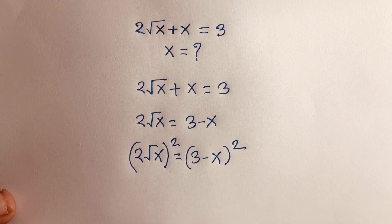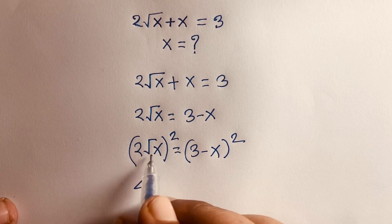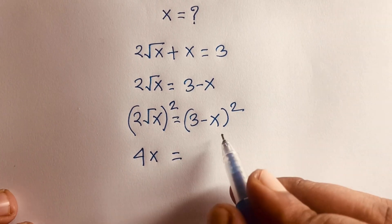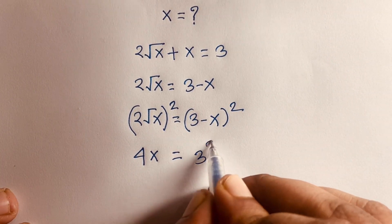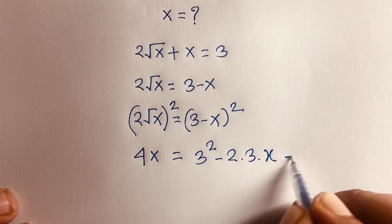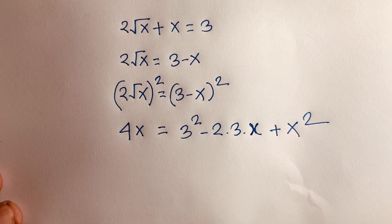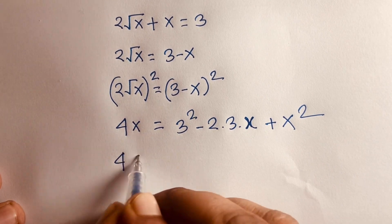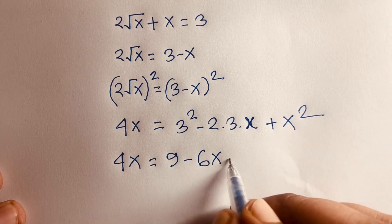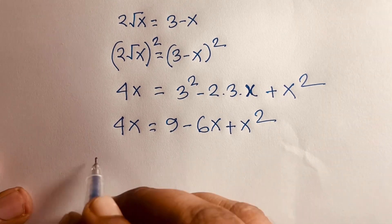Squaring both sides: 2² = 4, and the square root cancels, giving 4x on the left. On the right, using (a - b)² = a² - 2ab + b², we get 4x = 9 - 6x + x².